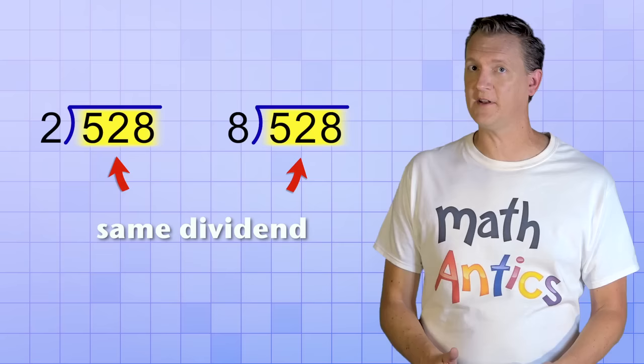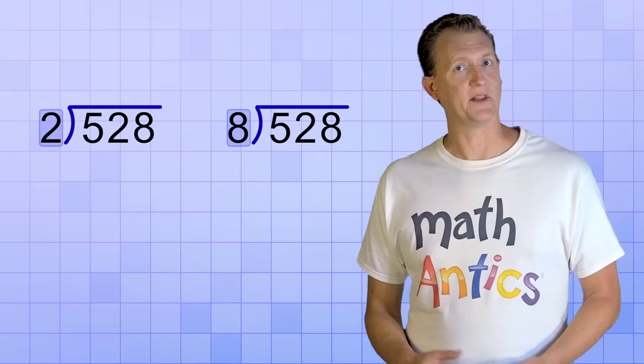To see what I mean, have a look at these two division problems. They both have the same dividend and both have a one-digit divisor. But these divisors are different numbers, and as you'll see, that's going to affect our digit by digit division process.